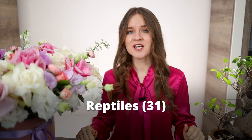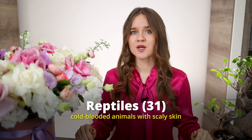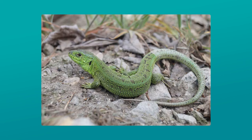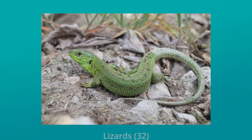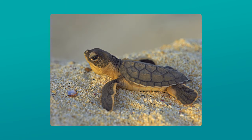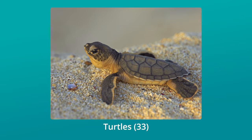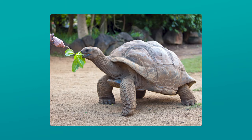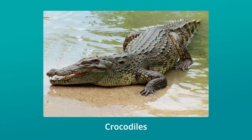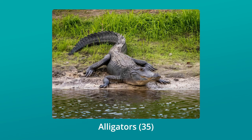Vertebrates also include reptiles, which are cold-blooded animals with scaly skin. Some examples are snakes, lizards – reptiles that have scales for skin, a long body, a pointed tail, and usually four legs – turtles, tortoises, crocodiles, and alligators.